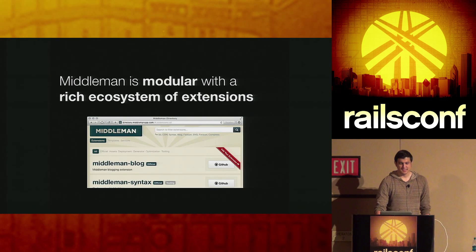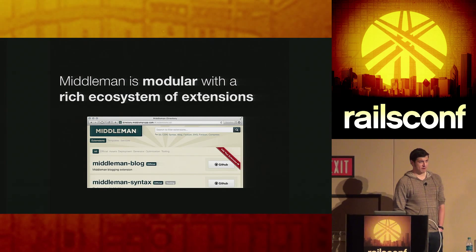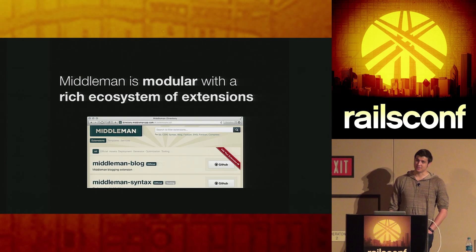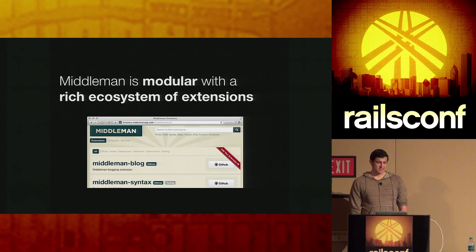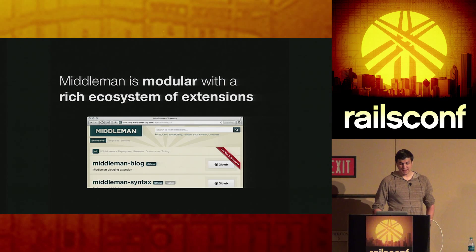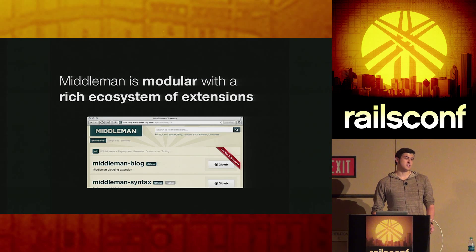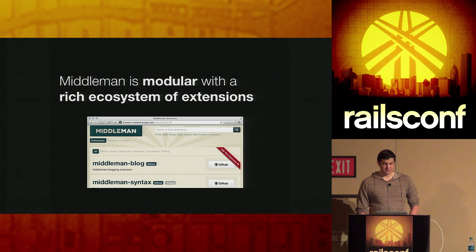Another really nice thing about this static site generator is that it's very modular. It actually uses Rack in its guts, so if you understand Rack, you can write a lot of extensions using it. There's also an extension framework where you can roll things out, like Middleman Blog. Middleman with Middleman Blog is essentially a drop-in replacement for Jekyll, with a few tweaks needed for GitHub-flavored Markdown.